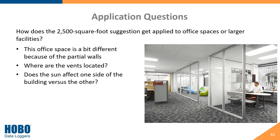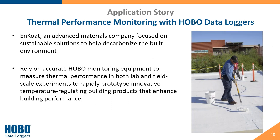Similarly, if a 2,500 square foot office space has partitions, walls, or cubicles, one logger might not suffice. You'd likely need to place data loggers in each of those areas to see what the conditions are. This data may also help in the future when updating your HVAC system — determining where you need to place more vents or remove vents from.